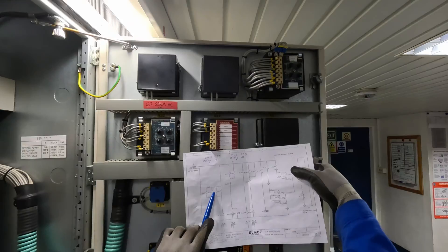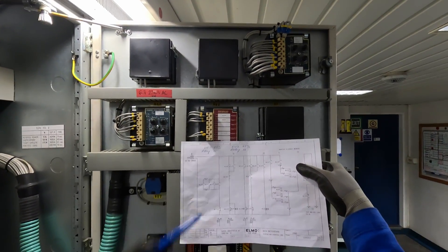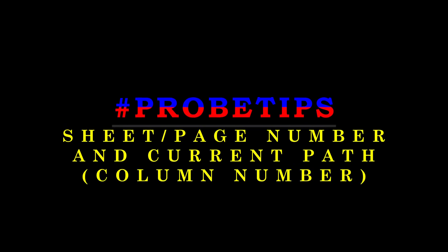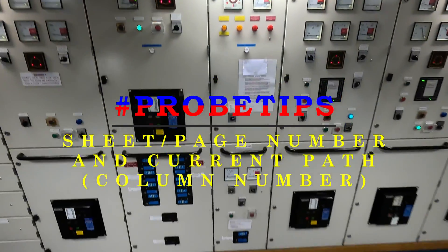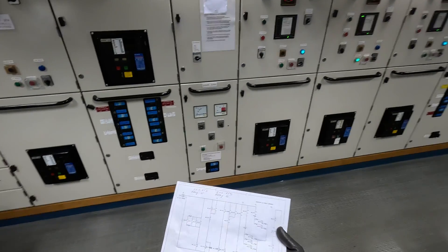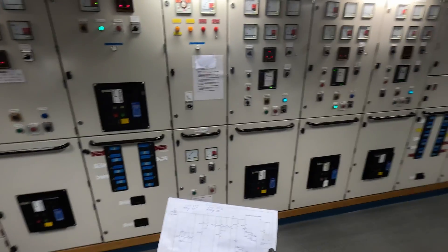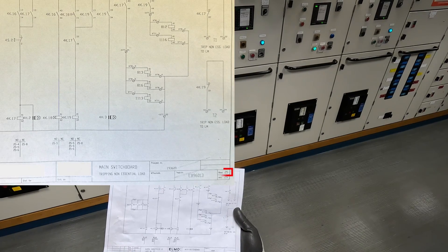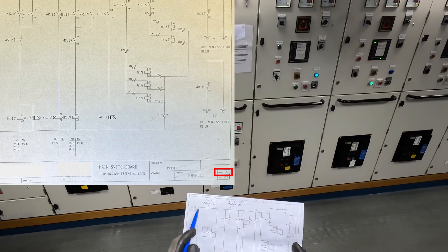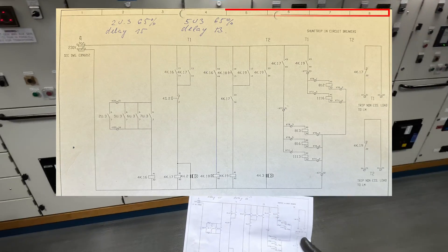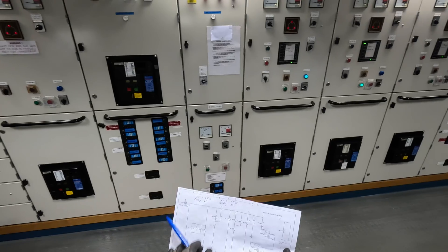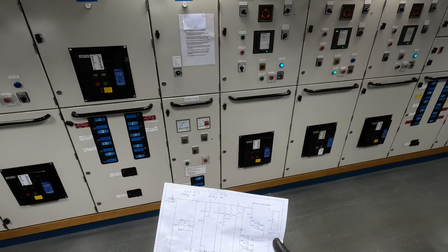This is called 6U3. 6U3 is the device tag for this particular overload and reverse power relay. How to read the basics: first, we have to identify this page as a load and only schematics for this main switchboard trapping non-essential load. This is page 25, and these numbers 1 to 8 refer to the current path. For every number, there is a particular column that we will explain later.